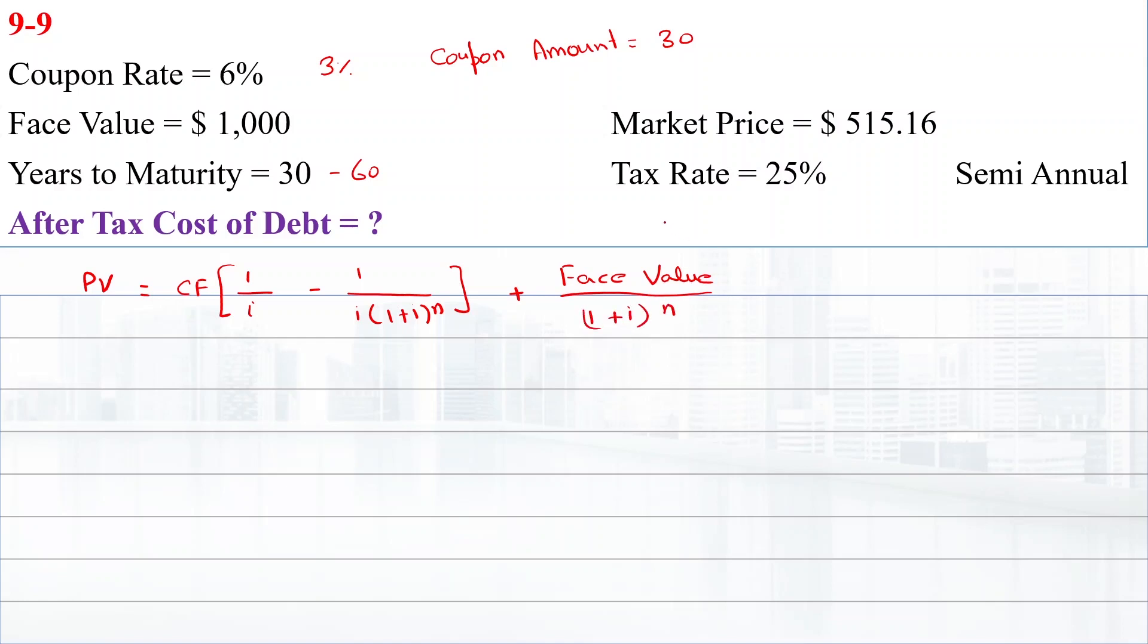Here i equals the rate. At 5%, the present value is $563.75. At 6.5%, the present value is $473.85.